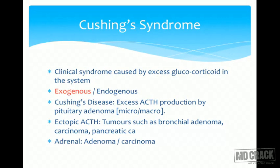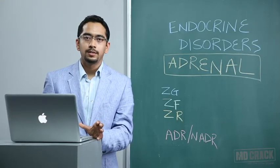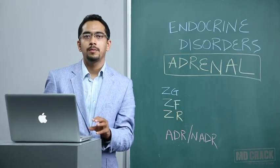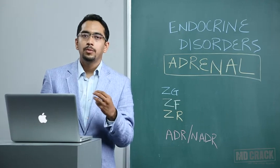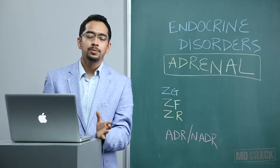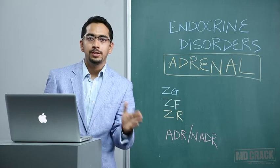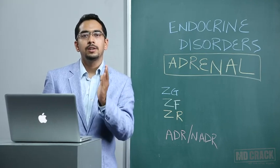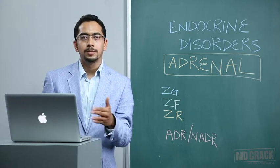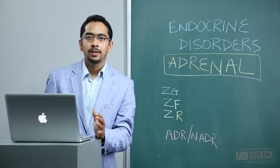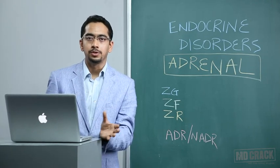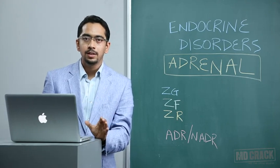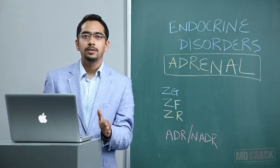Adrenal lesions — adenoma and adrenal carcinoma — are rare in adulthood and more commonly seen in infants and children. If we have adrenal carcinoma, most are producing more than one hormone, so they are mixed hormone-producing tumors. We can have features of Cushing's syndrome along with features of other hormone excess such as mineralocorticoid and sex steroid excess. If you see features of virilization along with Cushing's syndrome, please suspect adrenal carcinoma.